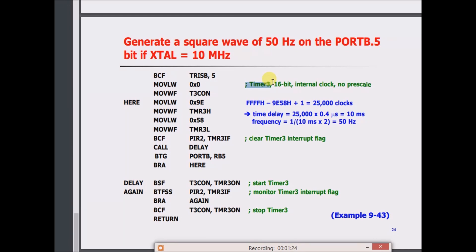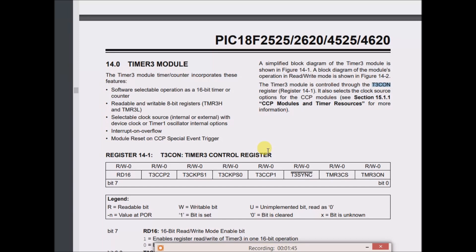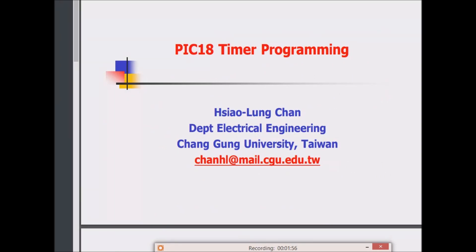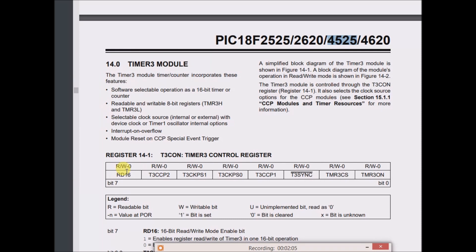So he's moving, I'm making a literal of zero into the timer 3 register. Apparently this is selecting 16 bits, the internal clock, and no prescale. Well, this is the data sheet for my particular chip, 18F4525. I'm just going to assume that Hsiao Lung Chan is using a similar chip.